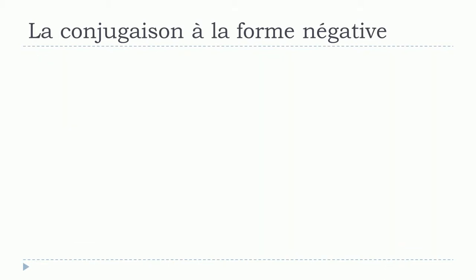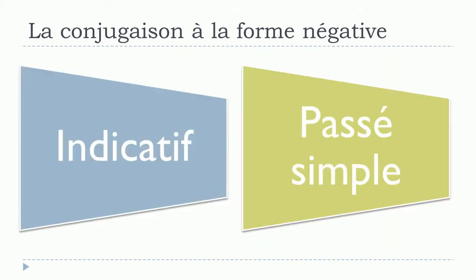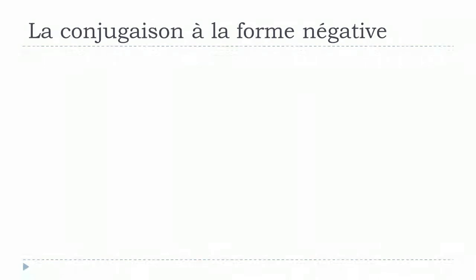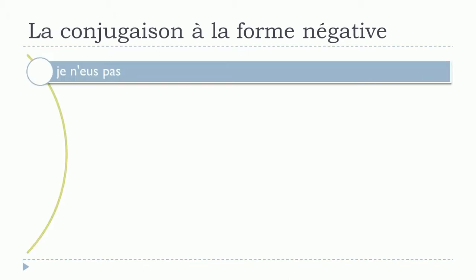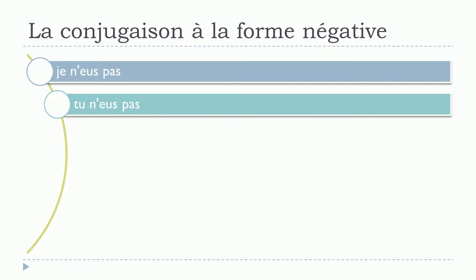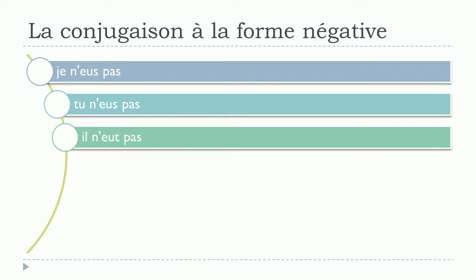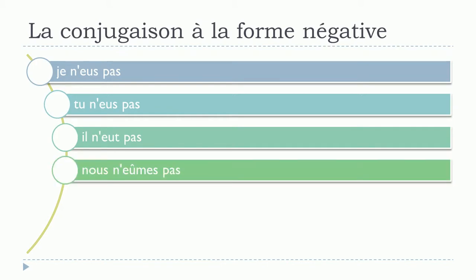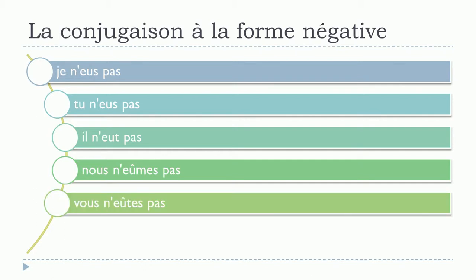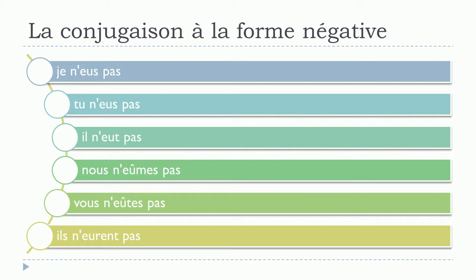And after that, indicatif passé simple. Je n'eus pas. Tu n'eus pas. Il n'eut pas. Vous n'eûtes pas. Ils n'eurent pas.